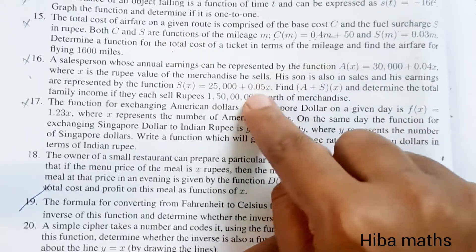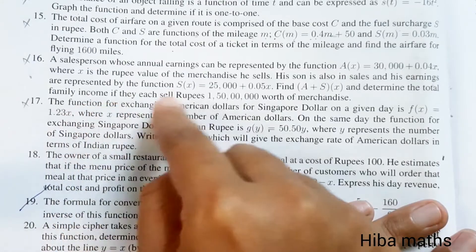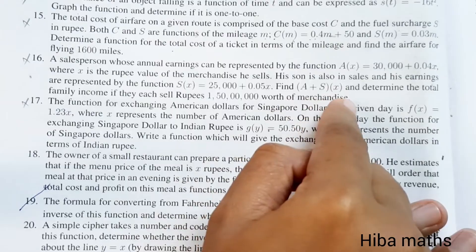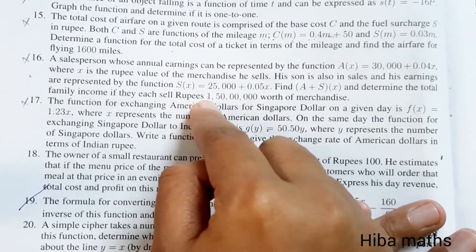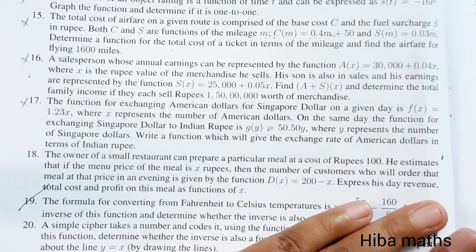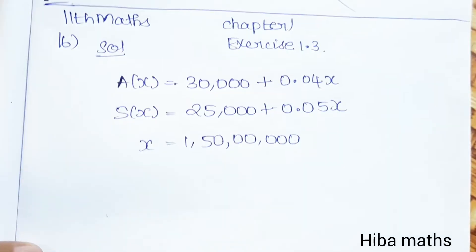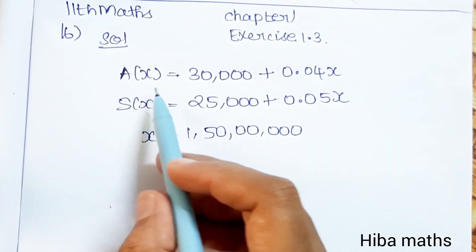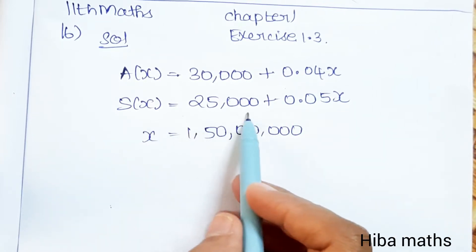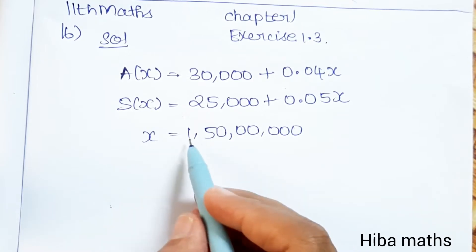We also need to determine the total family income if they sell rupees one crore fifty lakhs worth of merchandise. In the solution, we are given: A(x) = 30,000 + 0.04x, S(x) = 25,000 + 0.05x, and the value of x is one crore fifty lakhs.